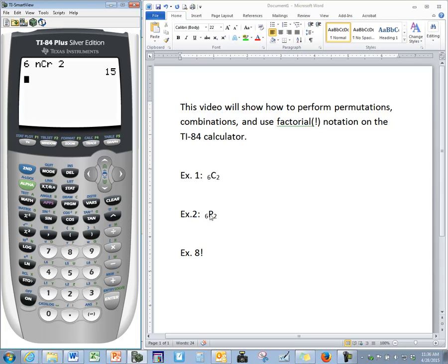For our second example, we want six permutations two. So once again, enter in total number of objects first, math, arrow over to PRB. You can select option number two or you can just scroll down to two. And then press r, the number of objects you're selecting.